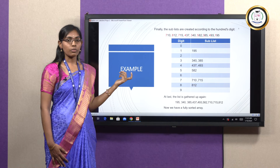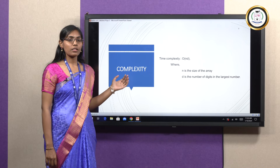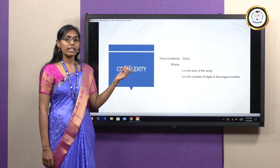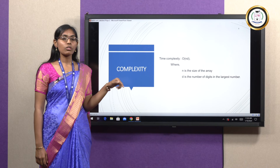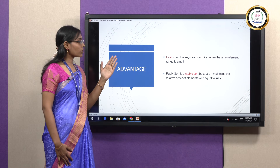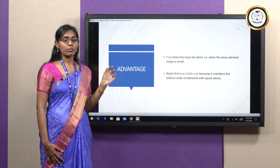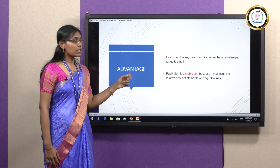This is how Radix Sort works. The time complexity of Radix Sort is O(N × D), where N is the size of the array — the number of elements — and D is the number of digits in each element. One advantage of Radix Sort is that it is fast when numbers are small, because it compares element-wise. It is also a stable sorting algorithm because it maintains the relative order of elements with equal values.